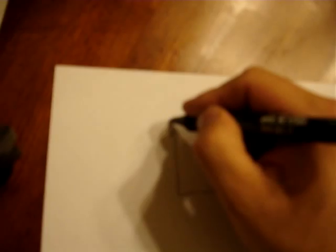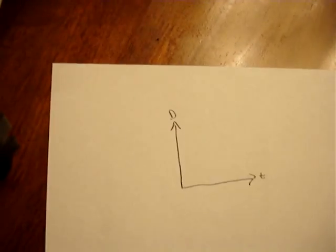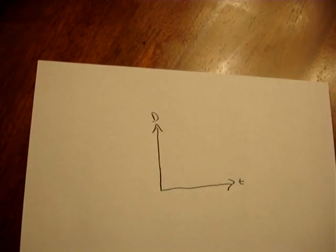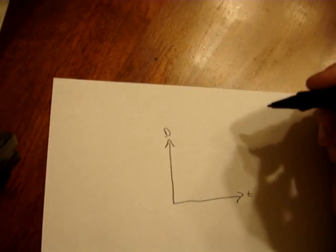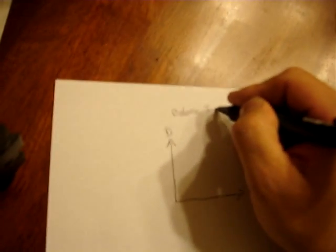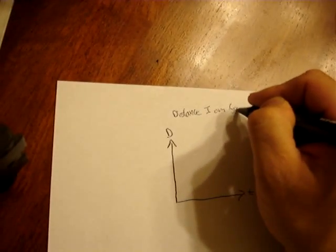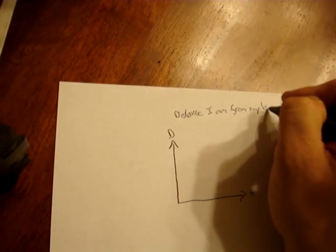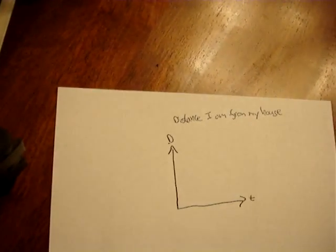So I'm going to label this time and distance. And of course, this is going to have to have a name, too. And this is going to be the distance I am from my house.